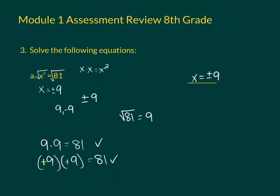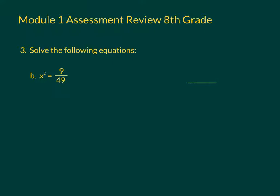Now let's do an example with a fraction. So with a fraction, we have x squared equals 9 over 49. It's going to be the same thing. The only difference is, since we're square rooting a fraction, our answer is also going to be a fraction. So we're looking for what number times itself is equal to 9 over 49 — really, some fraction times itself equal to 9 over 49.